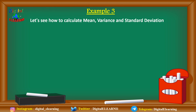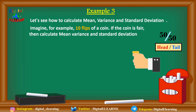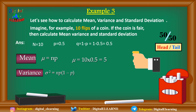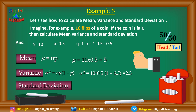Now let us take another example to calculate mean, variance, and standard deviation for a binomial distribution. Imagine you have a fair coin and flip it 10 times. Here n = 10, p = 0.5, and q = 1 − 0.5 = 0.5. Mean = np = 10 × 0.5 = 5. Variance = np(1−p) = 10 × 0.5 × 0.5 = 2.5. Standard deviation = √2.5 ≈ 1.58.